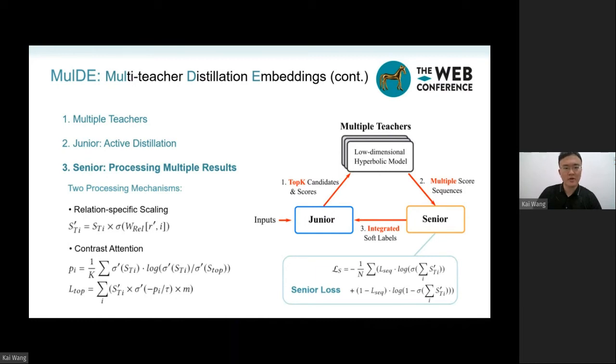The second one is an attention mechanism. We call it contrast attention. No more parameters are required. It defines the attention value as the KL divergence between junior scores and each teacher scores.